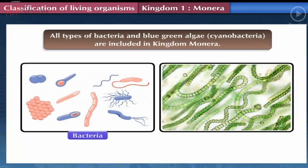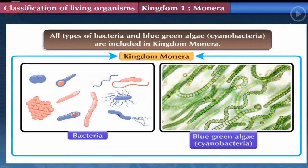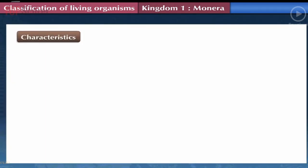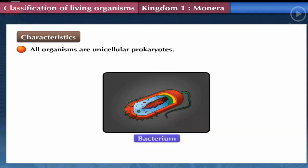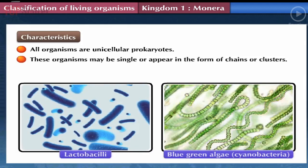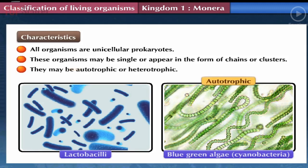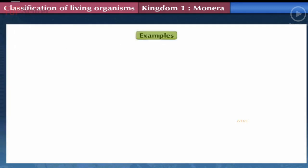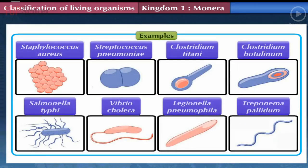All types of bacteria and blue-green algae (cyanobacteria) are included in Kingdom Monera. General characteristics: All organisms are unicellular prokaryotes — made up of only one cell without a distinct nucleus or cell organelles. These organisms may be single or appear in the form of chains or clusters. Organisms of Kingdom Monera may be autotrophic or heterotrophic.